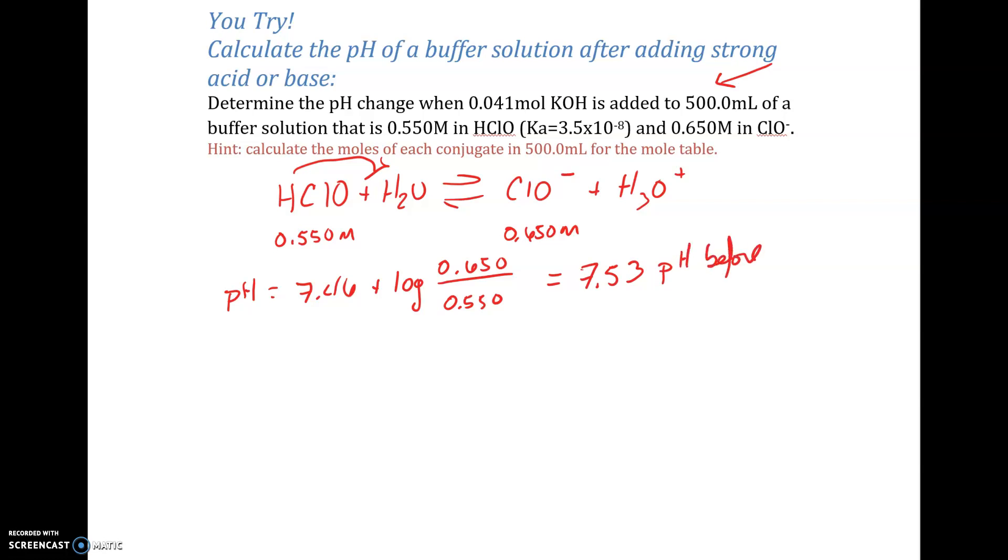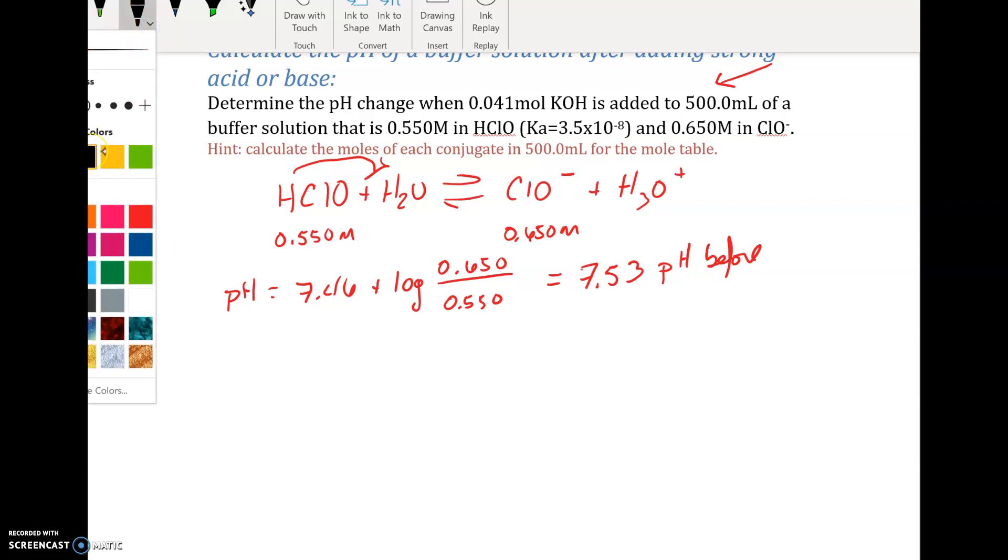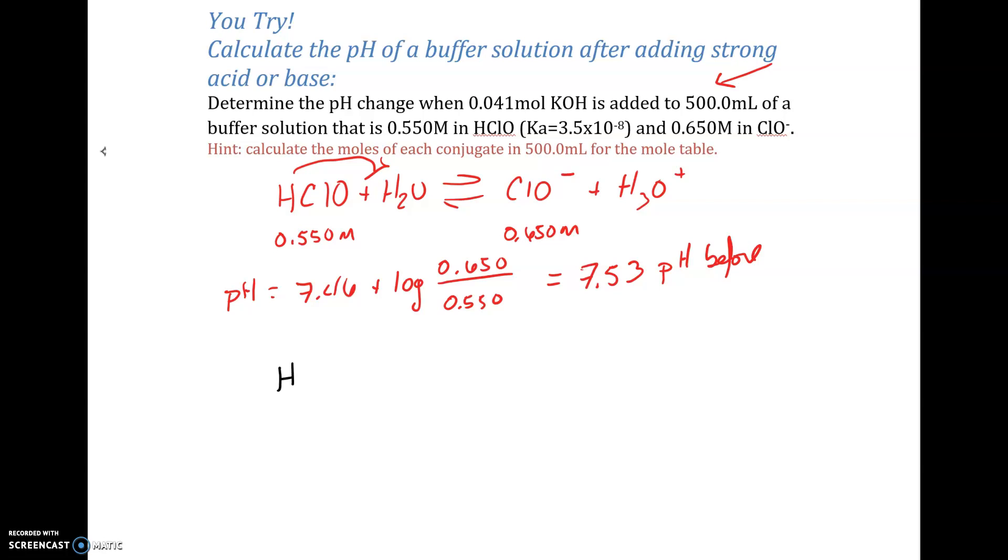Now we're adding a strong base. Our strong base is potassium hydroxide. The potassium's just a spectator ion, that's a neutral ion. So what we're really doing is adding OH- to this buffer system. Since it is a base, it will react with our weak acid and it will be neutralized. It's going to completely be neutralized by that weak acid. The weak acid amount is going to go down. Our conjugate base will go up. Remember, we need a mole table for these strong acid weak base or strong base weak acid additions.